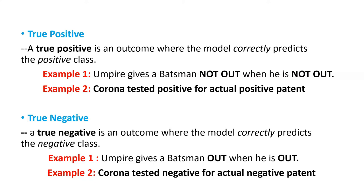The second evaluation metric is called true negative — the model gives an outcome where it correctly predicts the negative class. Using the cricket example: an umpire gives a batsman out when he is really out — that is true negative. Similarly, a corona test comes back negative for an actually negative patient — that is also true negative.